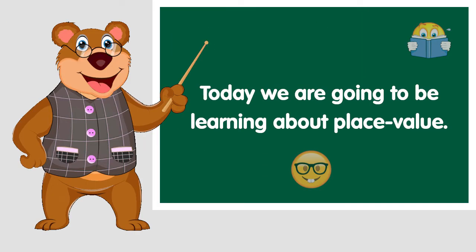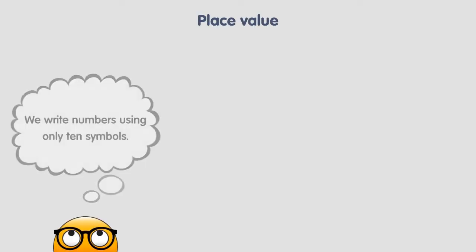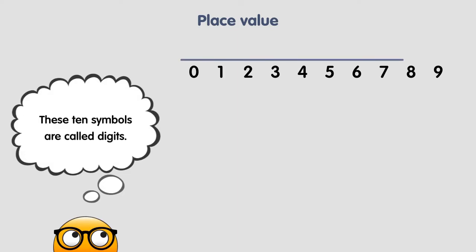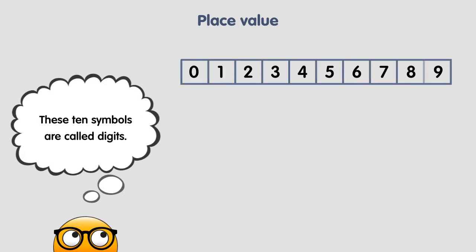Today we are going to be learning about something called place value. We write numbers using only 10 symbols. These 10 symbols are called digits. With them, we can make any number we want.